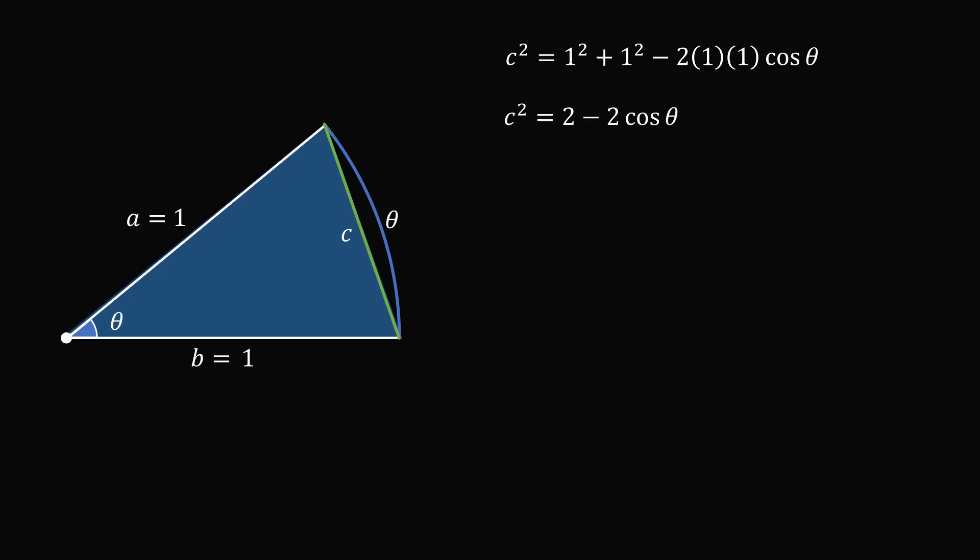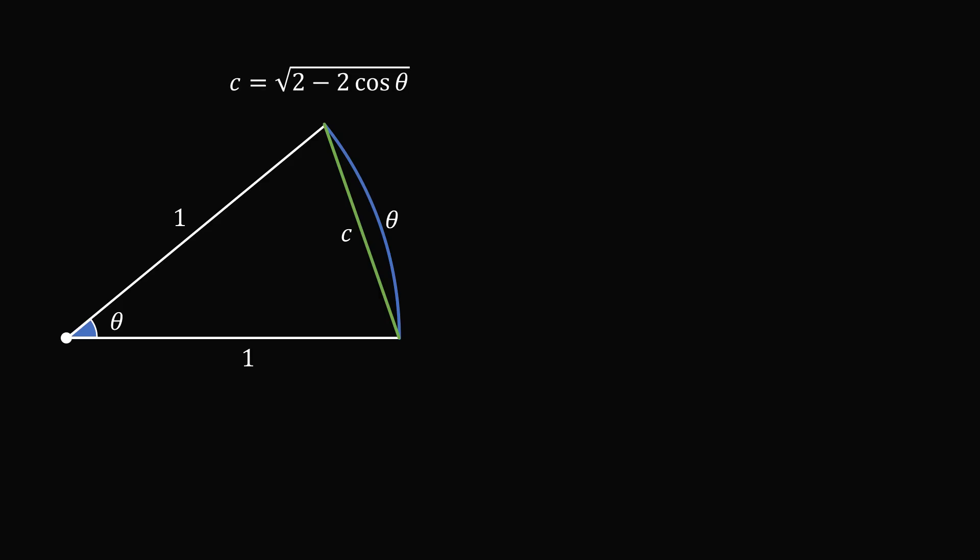Here we want a positive length c, so we will just take the positive square root, so that c is equal to the square root of 2 minus 2 cosine theta. So how does this help us solve the problem? Well, let's substitute in particular values of theta. Let's just do an example. Let's suppose that theta is equal to pi over 6. We can solve for c in that case. c is equal to the square root of 2 minus 2 cosine of pi over 6. Cosine of pi over 6 is equal to root 3 over 2. And then simplifying, we get that c is equal to the square root of 2 minus root 3.